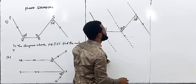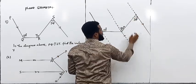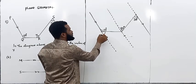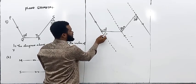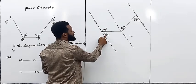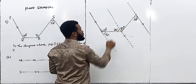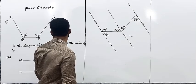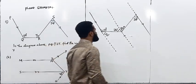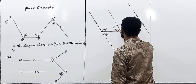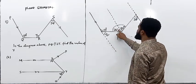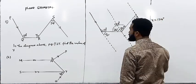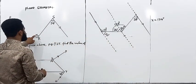There is a law called angle on a straight line — angle on a straight line is 180°. This angle is 110°, so what is remaining is 70°. If this is 70°, then this is also going to be 70° by alternate angles. Therefore, this particular angle is 54° plus 70° which gives 124°. So x is equal to 124 degrees because x is the angle we are looking for at point R.